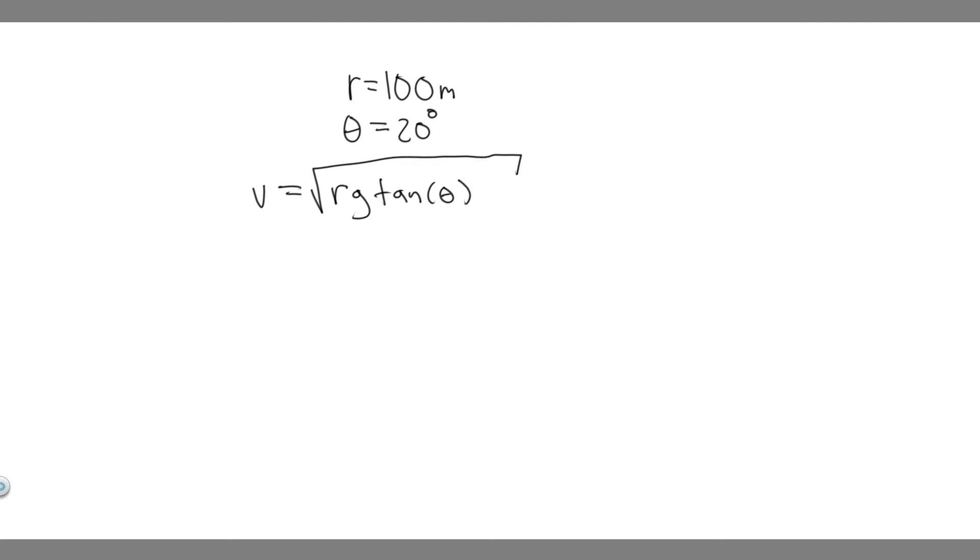So what this equation is going to allow us to do is if we have a banking angle, in this case 20 degrees, and we have a radius, we can find the ideal speed to go around it, essentially, or our ideal velocity.